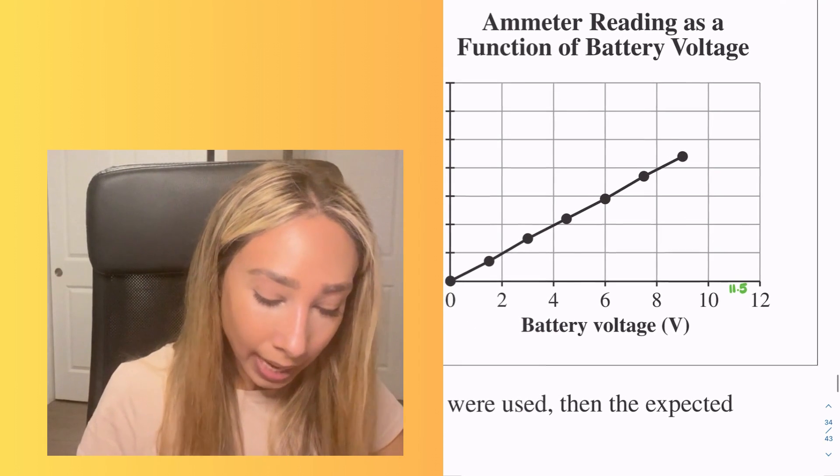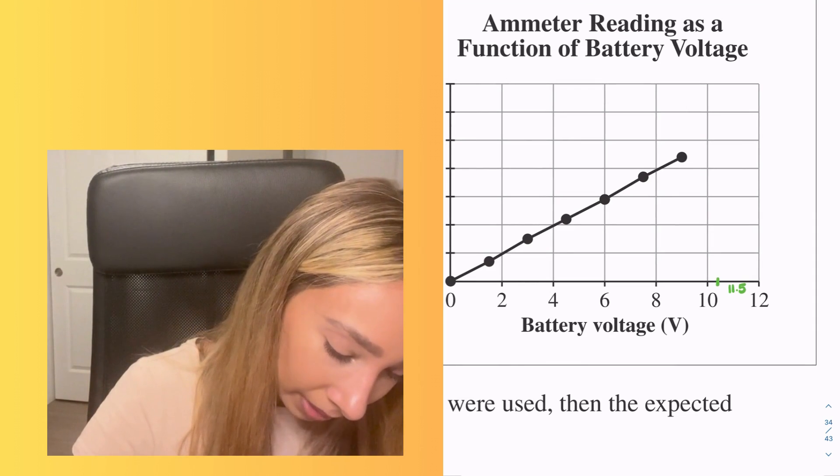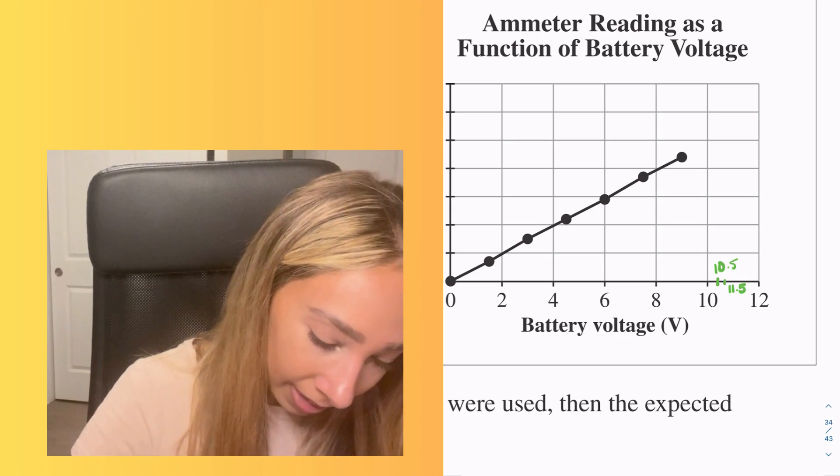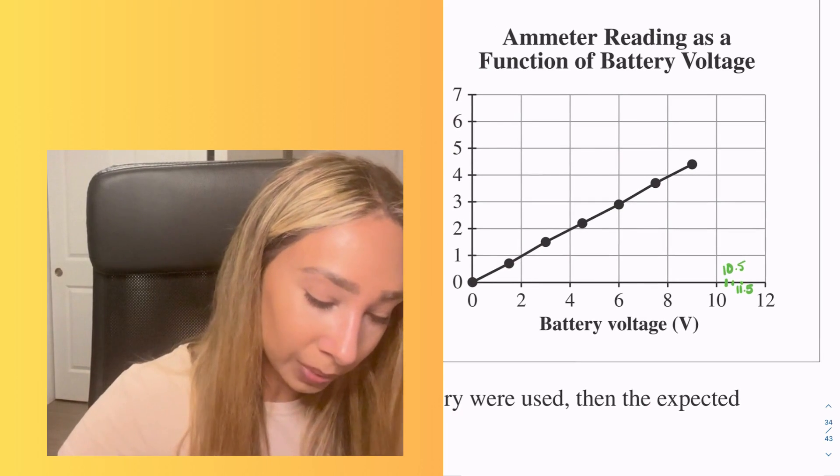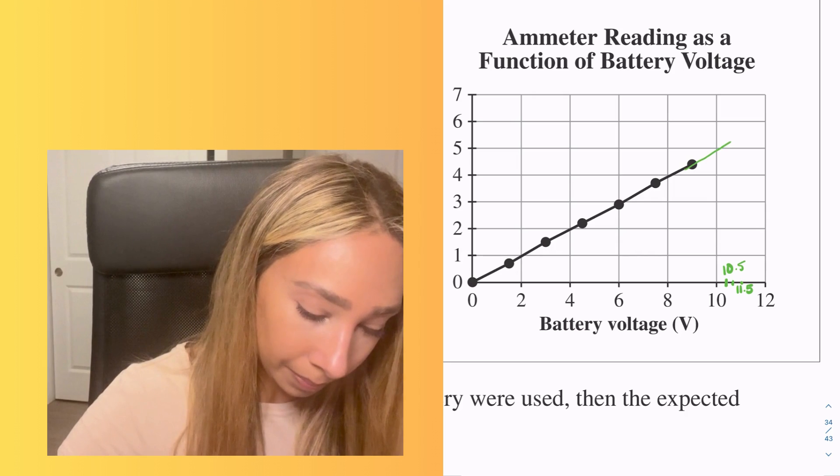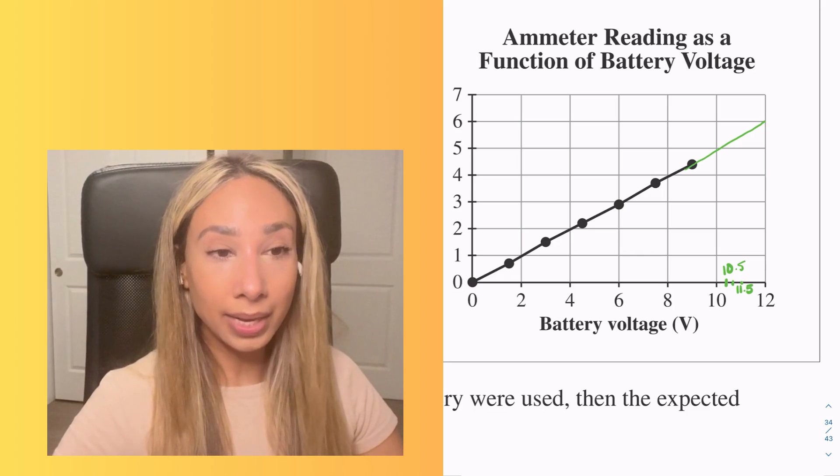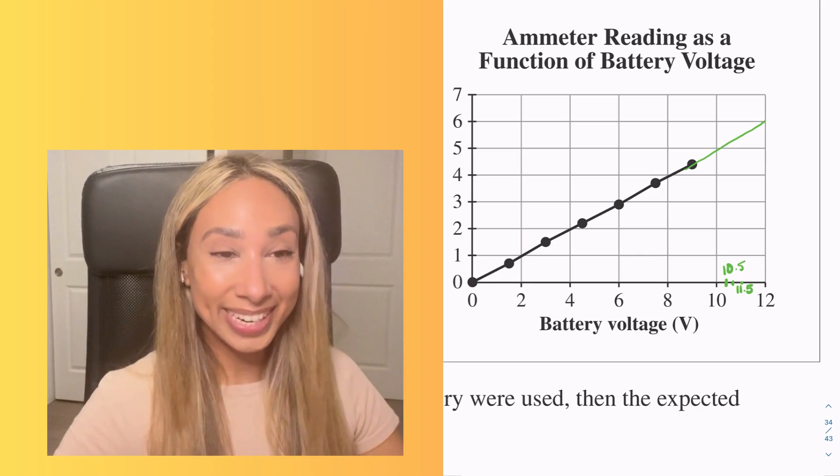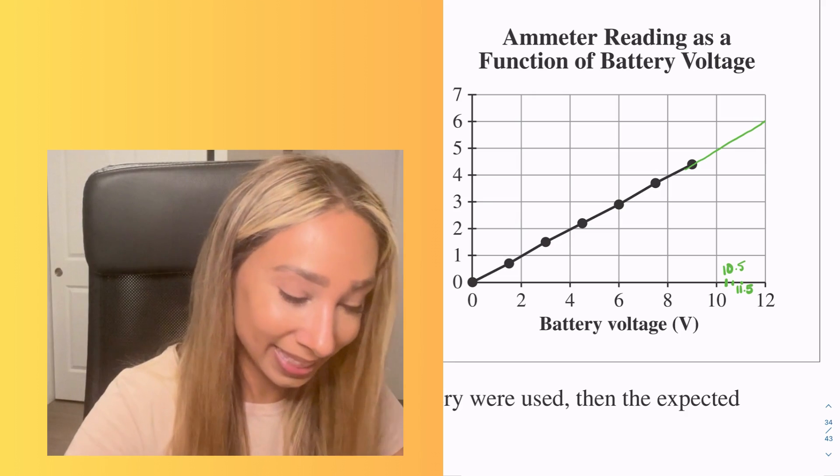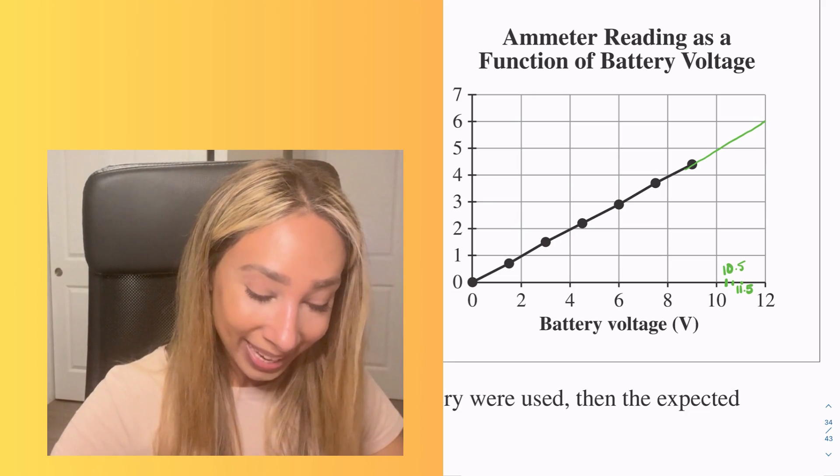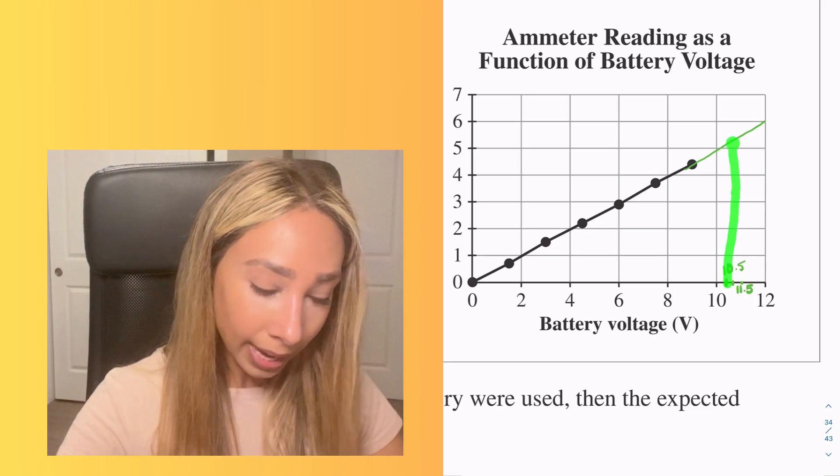Which means 10.5 has to be in between there. So I'm going to pop 10.5 at about here, right? Because about there would be 11 and then 11.5 and you get the idea. Now, the other thing that I'm going to do is extend my graph as best as I can. And now I'm going to use that graph to help me answer what the amp meter reading would be using a 10.5 voltage battery.